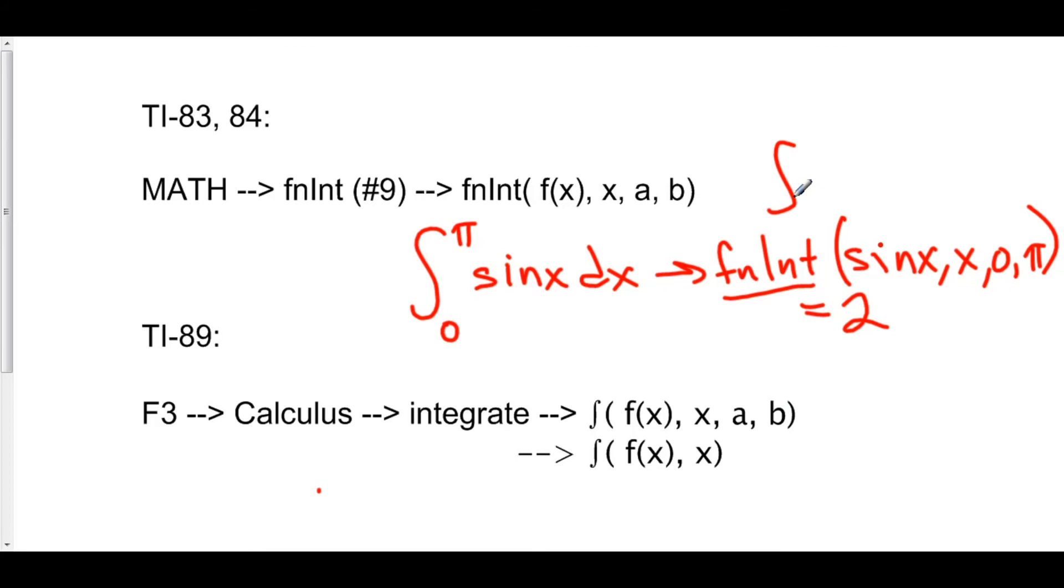There's something else in the TI-89 that you are allowed to do that you cannot do in the 83 or 84. Not only can you find the integral from a to b, but you can also find the indefinite integral, the anti-derivative. To do that, you'll find the exact same function under F3 calculus and the integrate sign.